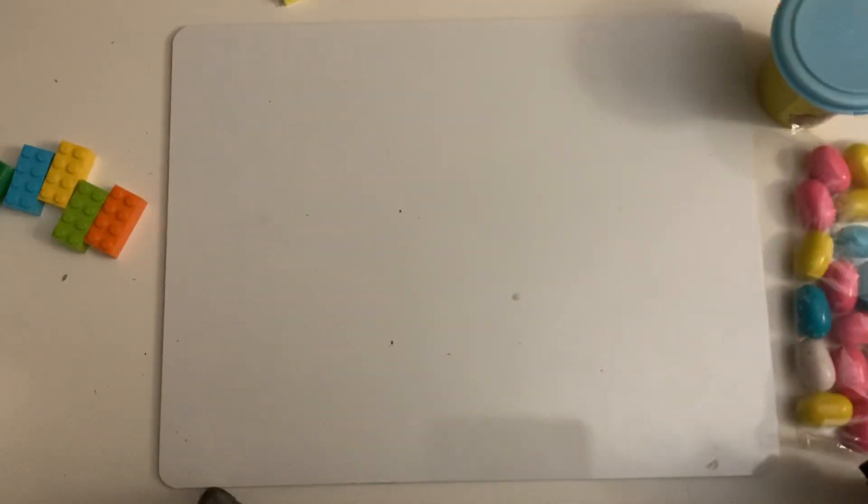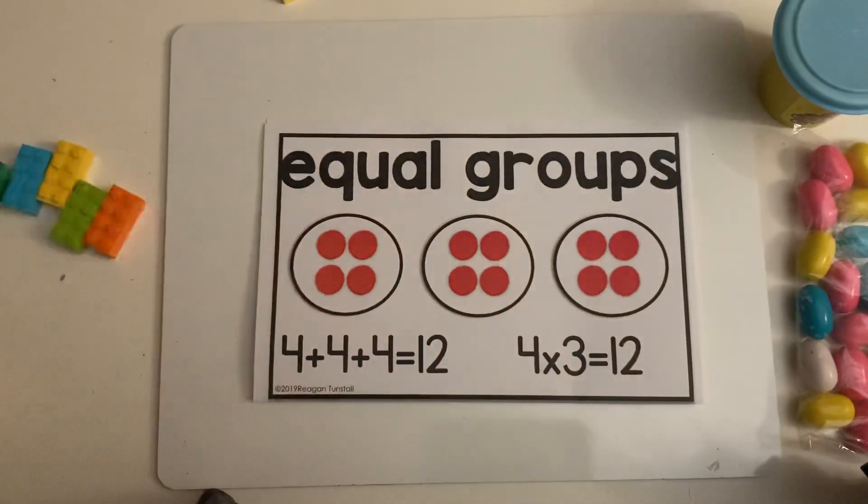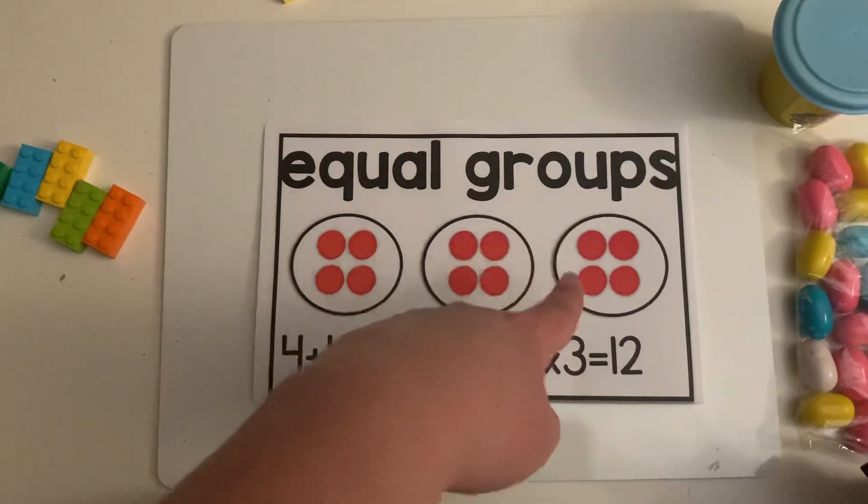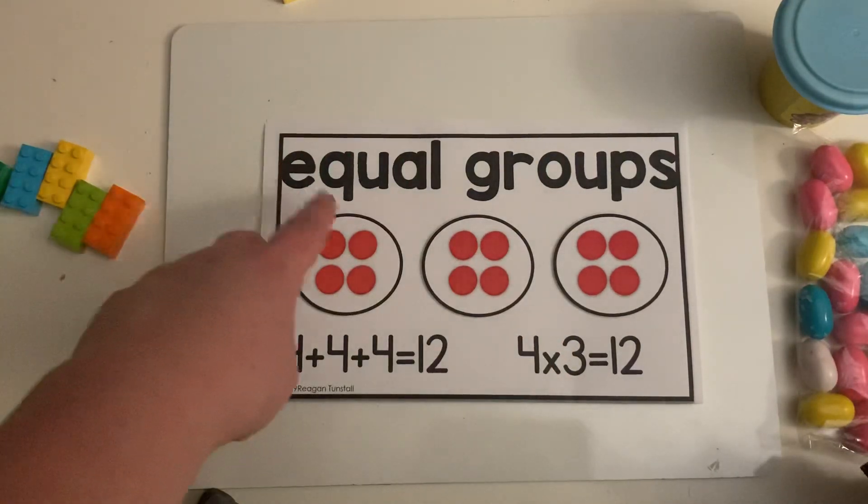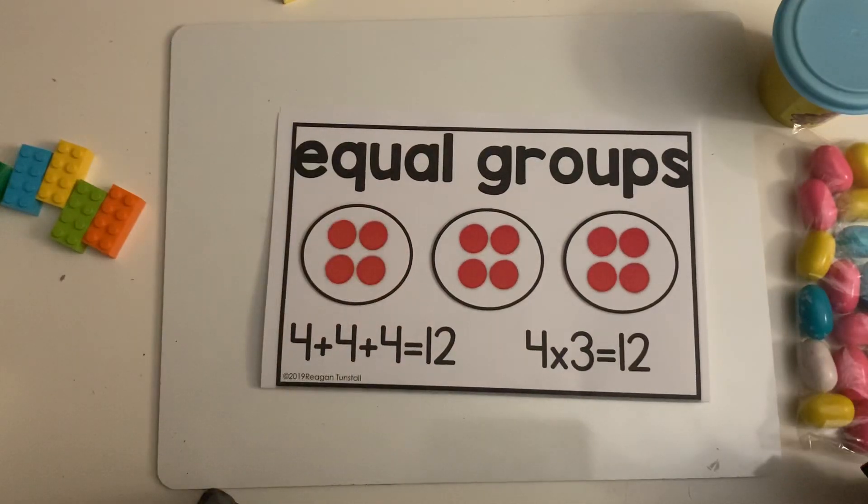All multiplication is is making equal groups. So for example, in this picture, we have one, two, three groups of one, two, three, four. So we have three groups of four.